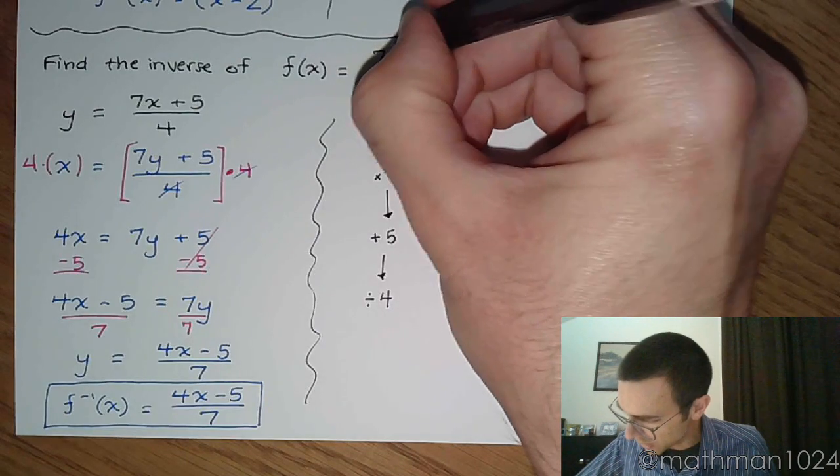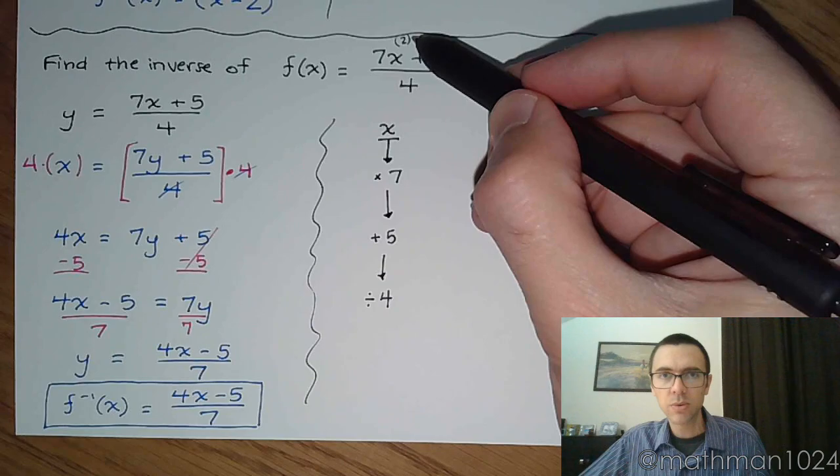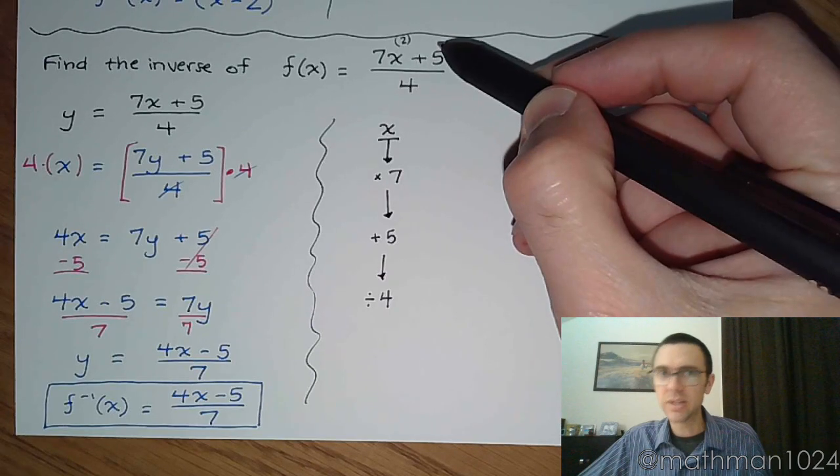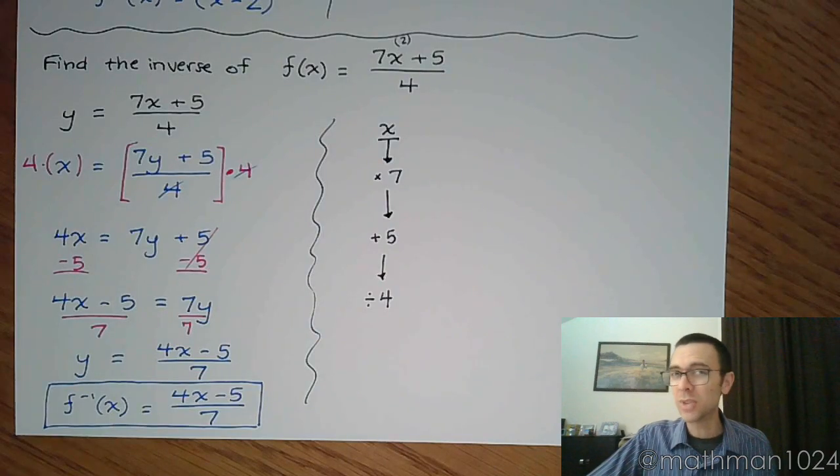Again, if I just play around and I just plug a 2 in there, you would do 7 times 2, take that result plus 5, take that result, divide by 4. Let's see what the inverse says. So the inverse is going to go backwards.